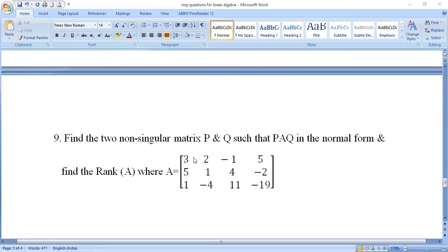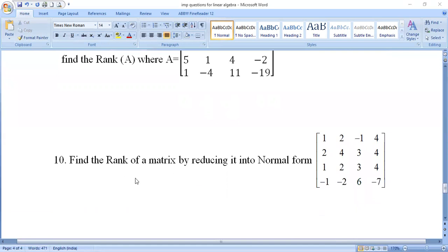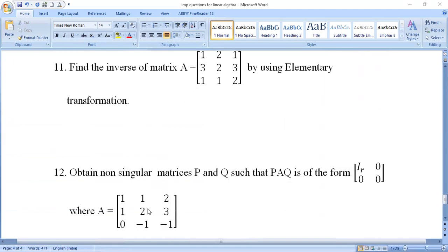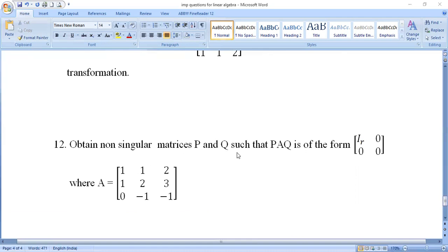Ninth question: Find two non-singular matrices P and Q such that PAQ is in normal form and find the rank of A, where A is a 3 by 4 matrix. PAQ form and normal form are very important. Tenth question: Find the rank of matrix A by reducing it to normal form for a 4 by 4 matrix. Eleventh question: Find the inverse of matrix A using elementary row transformations. Last question: Obtain non-singular matrices P and Q such that PAQ is in the form [Iᵣ 0; 0 0].